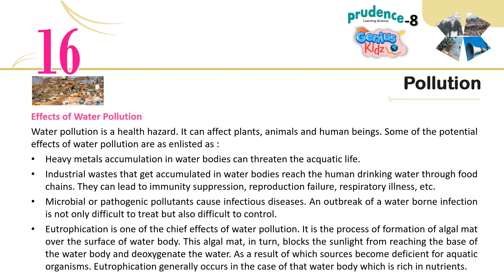Effects of water pollution: Water pollution is a health hazard. It can affect plants, animals and human beings. Heavy metals accumulation in water bodies can threaten aquatic life. Industrial wastes that accumulate in water bodies reach human drinking water through food chains. They can lead to immunity suppression, reproduction failure, respiratory illness, etc. Microbial or pathogenic pollutants cause infectious diseases. An outbreak of a water-borne infection is not only difficult to treat but also difficult to control.